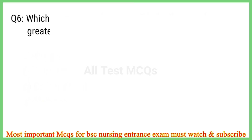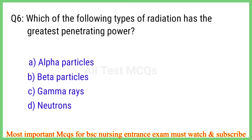Q6. Which of the following types of radiation has the greatest penetrating power? The right answer is option C: Gamma rays.